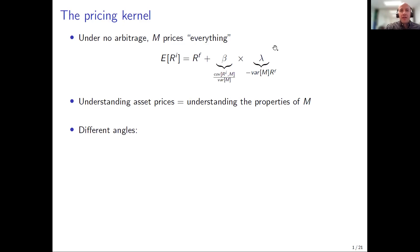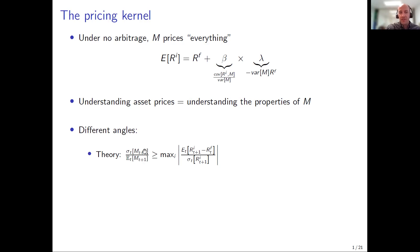Really understanding asset prices boils down to understanding the properties of M. This result is theoretically very elegant but practically not very useful because the pricing kernel can't be observed. So what we do instead: one thing we do is try to connect the pricing kernel to properties of assets. For example, the Hansen-Jagannathan bound tells us the pricing kernel is very volatile — we can infer this from the maximum Sharpe ratio across assets.